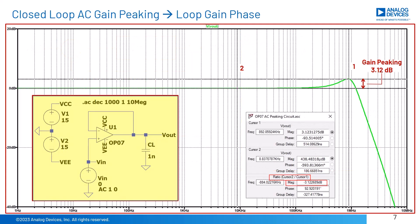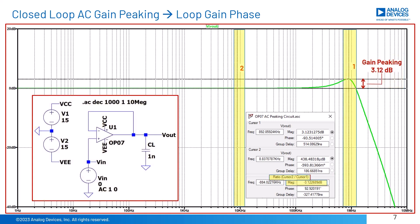A typical AC closed-loop gain test circuit is shown here. For this op-amp, OP-07, with a capacitive load CL equals 1 nF, the gain peaking relative to the low-frequency flat part of the gain is 3.12 dB. The math on the cursors is cursor 2 over cursor 1, or in dB: 0 dB minus 3.12 dB equals minus 3.12 dB. This measurement will be used on a phase margin versus gain peaking plot to determine the loop gain phase margin.